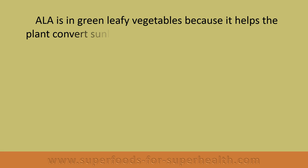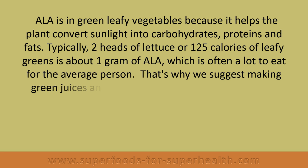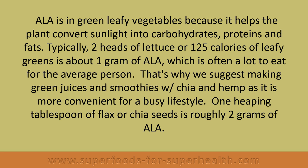ALA is in green leafy vegetables because it helps the plant convert sunlight into carbohydrates, proteins, and fats. Typically 2 heads of lettuce or 125 calories of leafy greens provides about 1 gram of ALA, which is often a lot to eat for the average person. That's why we suggest making green juices and smoothies with chia and hemp for a busy lifestyle. One heaping tablespoon of flax or chia seeds is roughly 2 grams of ALA.